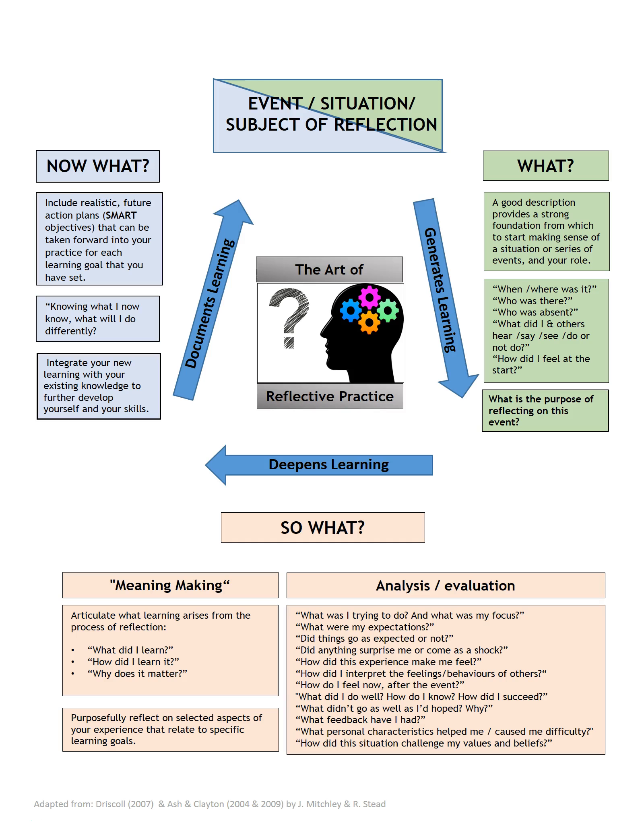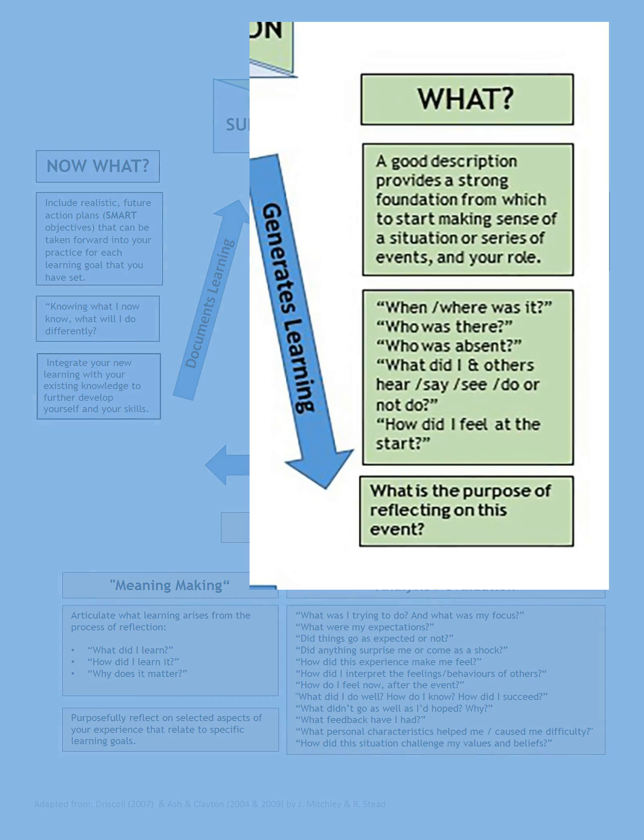So now let's look in more detail at the first stage of the reflective cycle. The question what. So here we want to give a good description to set the scene for our reader, what happened, where we were, who we were with, what we were doing. This is all really important so that we can start making sense of the situation or a series of events, but also making sense of our role within that event.